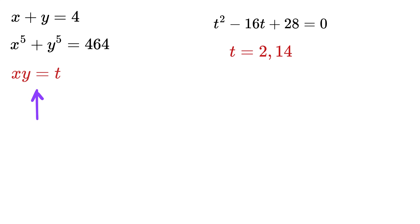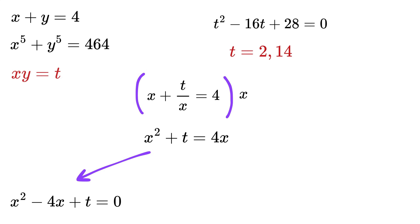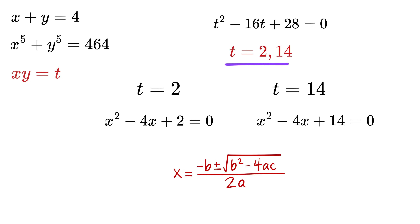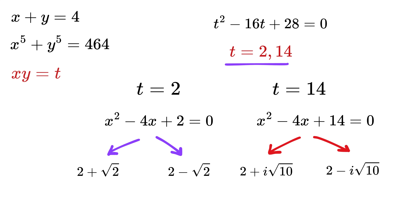Since xy equals t, we have y equals t over x. Substituting y into x plus y equals 4 gives x plus t/x equals 4, so x² minus 4x plus t equals 0. For the two values of t, we solve with the quadratic formula: for t equals 2, x equals 2 plus √2 and 2 minus √2; for t equals 14, x equals 2 plus i√10 and 2 minus i√10, where i is the square root of negative 1, giving complex roots.